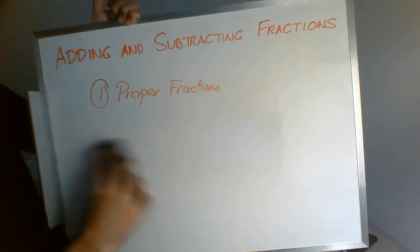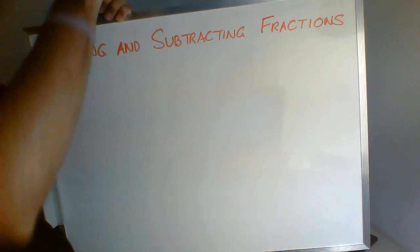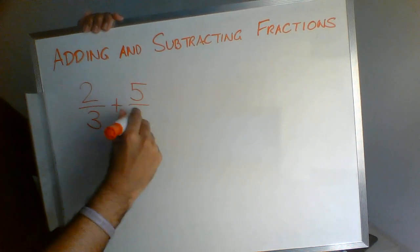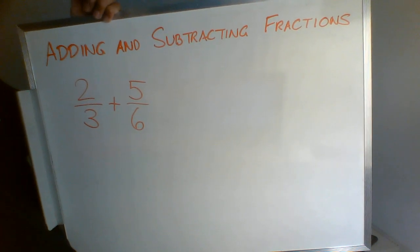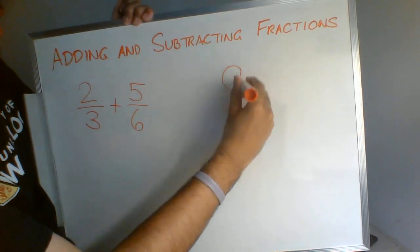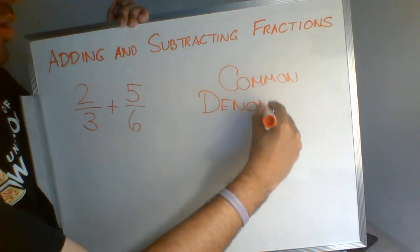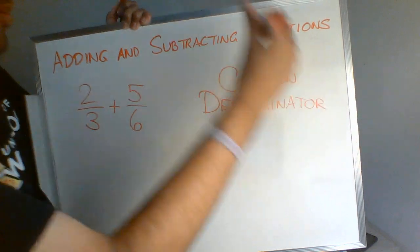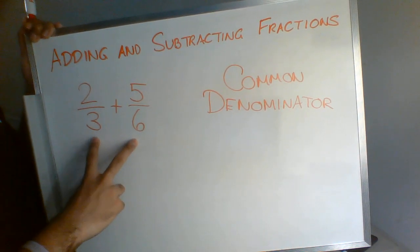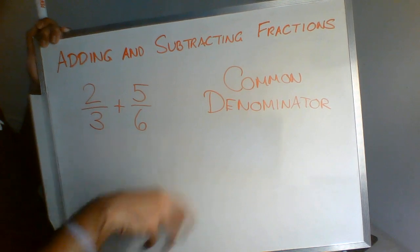Let's start with Section 1: adding and subtracting proper fractions. We're going to try to add two proper fractions together. Let's say we want to add two-thirds and five-sixths. What you need when adding and subtracting fractions is what we call a common denominator — you want both fractions to have the same denominator so that you can add them.